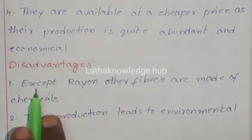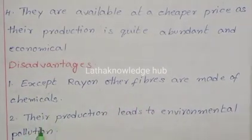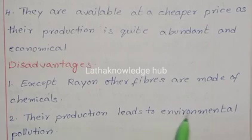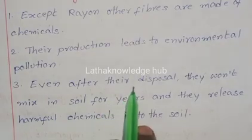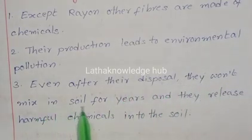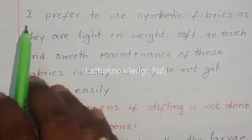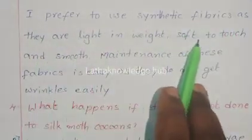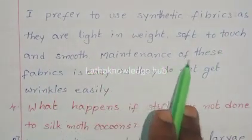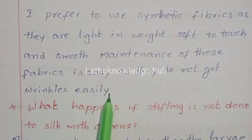Disadvantages: Except rayon, other fibers are made of chemicals. Their production leads to environmental pollution. Even after their disposal, they won't mix in soil for years and they release harmful chemicals into the soil. I prefer to use synthetic fabrics as they are light in weight, soft to touch, and smooth. Maintenance is easy as they do not get wrinkles easily.